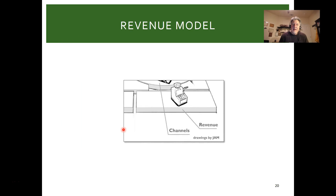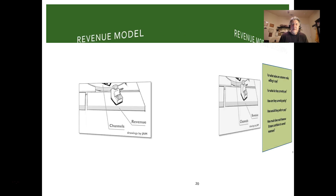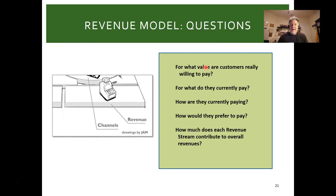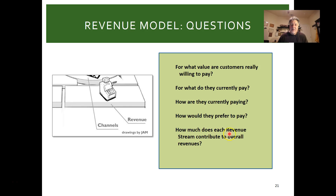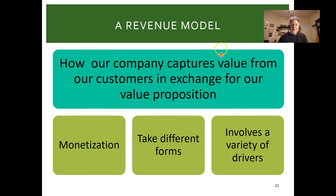Now the revenue model — it's about the money. Think about what value the customer is really paying for versus alternatives — rivals, substitutes, or new entrants — and what they're currently paying. When you make your offering, how much more or how different is it? How are they currently paying — per unit or subscription? You can change the game by changing the payment model — net 30 days, upfront, credit card, wire. How much does each revenue stream contribute overall?